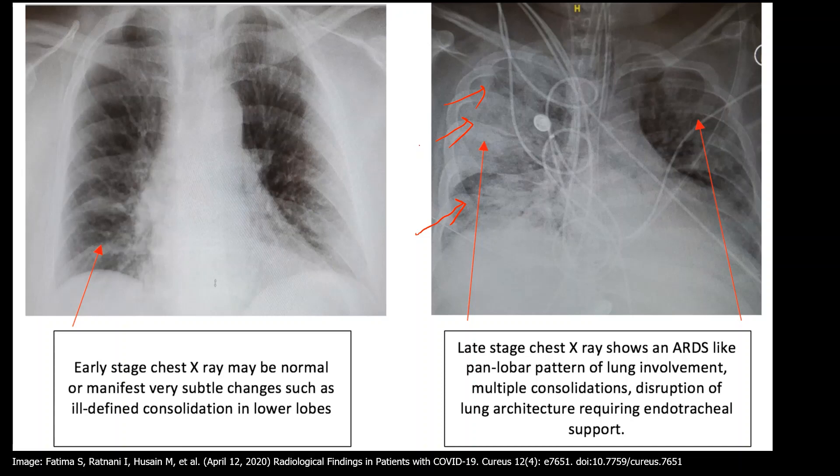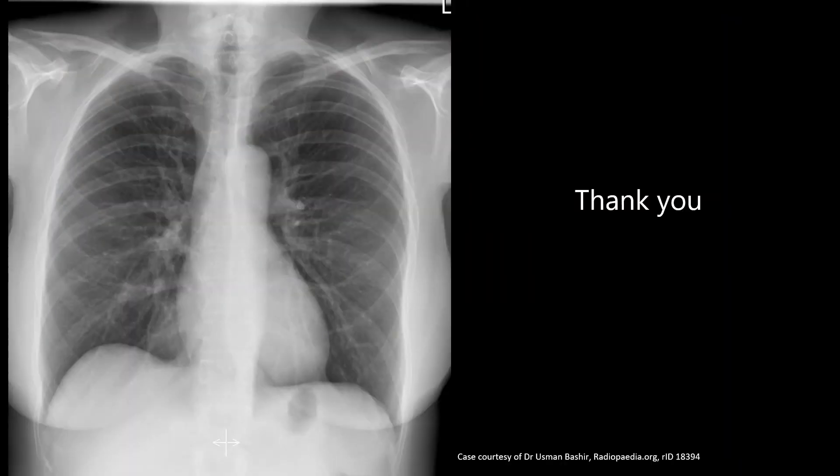To conclude, in a chest x-ray you should look for A, B, C, D, E: A for airway, B for breathing, C for circulatory status, D for any deformity of body or other structures, and E for every other possibility or pathology. Thank you.